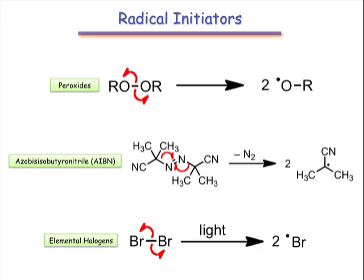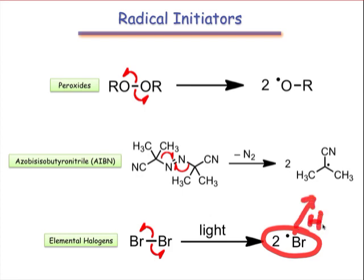Finally, the elemental halogens, such as Br2 and I2, are commonly used to initiate radical reactions. Under the influence of light or heat, the Br-Br bond can break homolytically to reveal two molecules of bromine radical, which, like the alkoxy radicals generated by peroxides, are able to abstract hydrogen from organic substrates to initiate radical reactions. One important point to keep in mind for all of these is that generating the radical is an endothermic process in all cases, and so an energetic input of light or heat is necessary to initiate the reaction of the initiator.